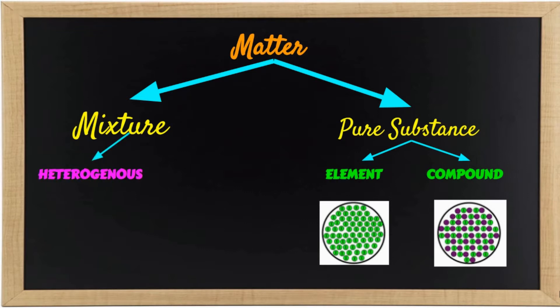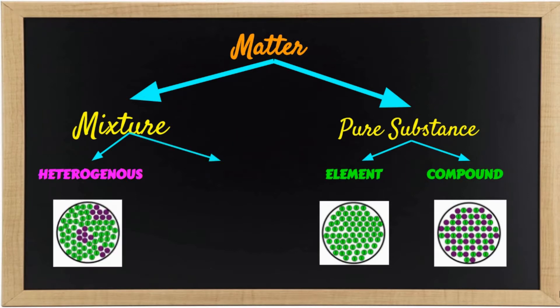The difference of the mixture from pure substance is that a mixture is formed by physical means and is composed of two or more forms of matter. Mixture can be classified into heterogeneous or homogeneous. The heterogeneous mixture is a mixture that is not evenly mixed, while homogeneous mixture is a mixture that is evenly mixed.